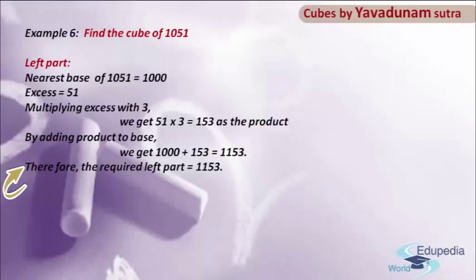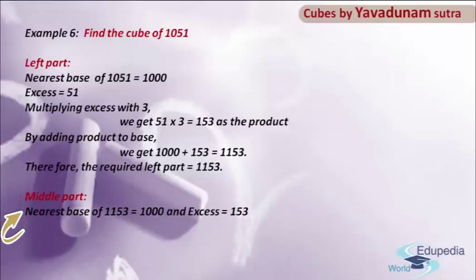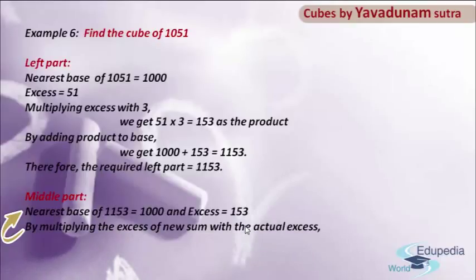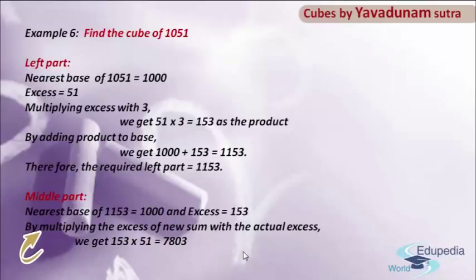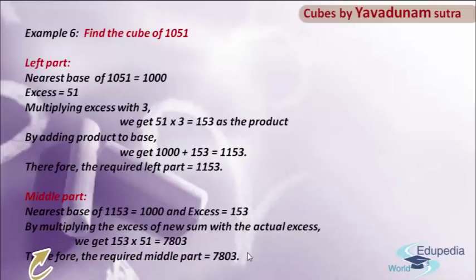After completing the left part, moving to the middle part: the first step is to take the answer from the left part and find the nearest base as well as the excess. The nearest base of the left part answer 1153 is 1000, and the excess is found by comparing 1153 with the base 1000, giving an excess of 153. Moving to step number 2, we multiply the new excess 153 with the actual excess 51. By multiplying 153 by 51, we get 7803 as the product, and this is regarded as the required middle part.